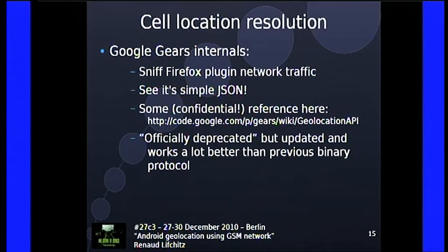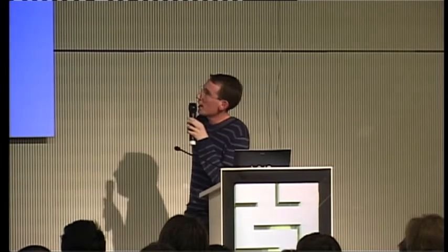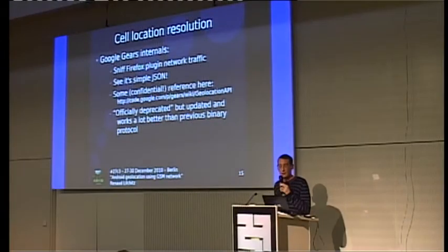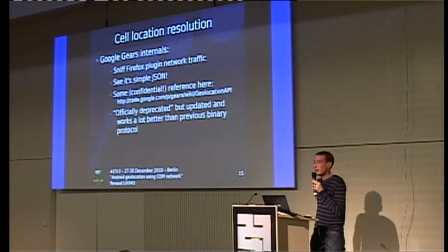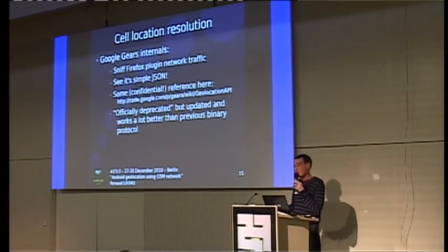Now looking at Google Gears by sniffing the Firefox plugin — it's much easier because it uses simple JSON, plain text. You don't have to reverse-engineer much. The only problem is it only uses Wi-Fi, not GSM. There's a confidential page discussing the Google Gears API on Google's website. It's officially deprecated but works very well — not buggy at all, easy to use, easy to understand, and regularly updated.